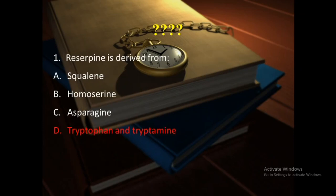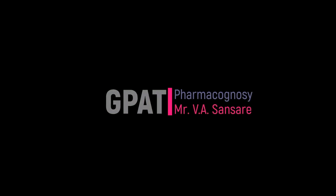Second question: reserpine is derived from which precursor? As discussed, reserpine is an indole alkaloid and the amino acid precursor is tryptophan (and tryptamine).